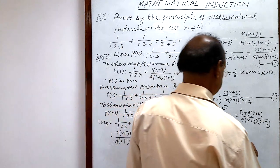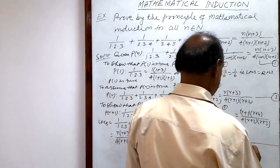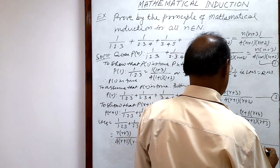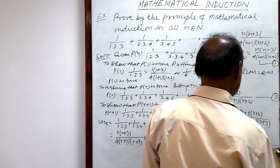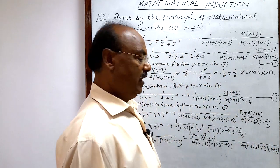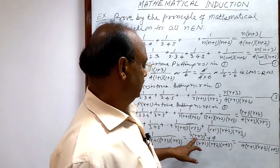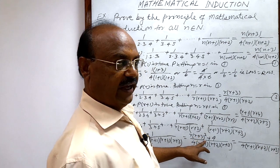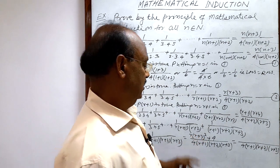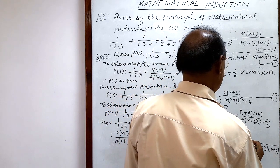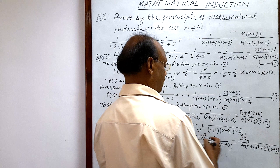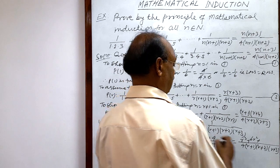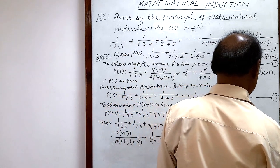Simplifying: the denominator is 4·(r+1)·(r+2)·(r+3). Expanding (r+3)² gives r²+6r+9, so the numerator becomes r(r²+6r+9) + 4 = r³ + 6r² + 9r + 4.